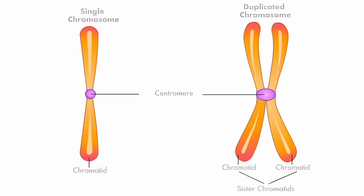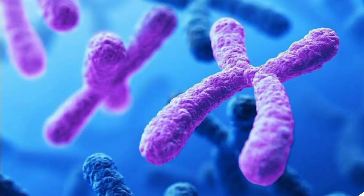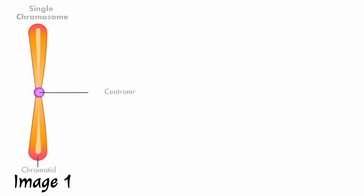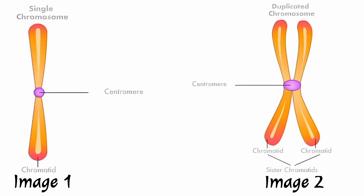Meiosis involves two stages: meiosis stage one and meiosis stage two. Note: the number of chromosomes is based on centromere count. A normal germ cell contains 23 paternal chromosomes and 23 maternal chromosomes. The cell then replicates its DNA, so the amount of genetic material doubles, but the chromosome number remains the same. Image one shows a chromosome before replication; image two shows a chromosome after replication.